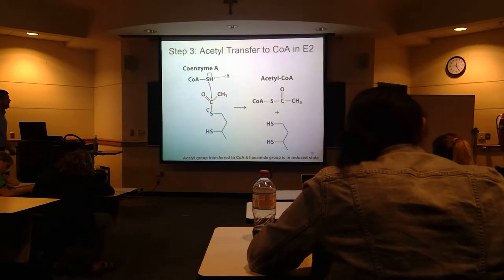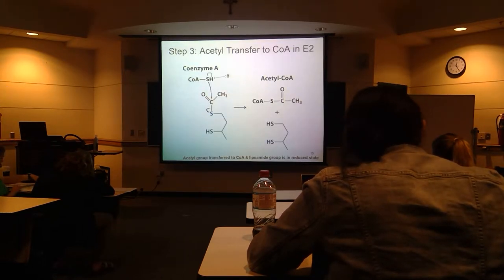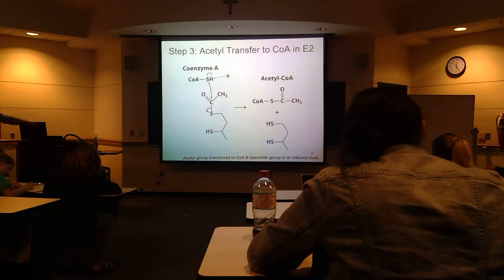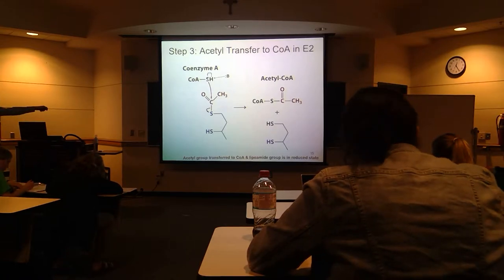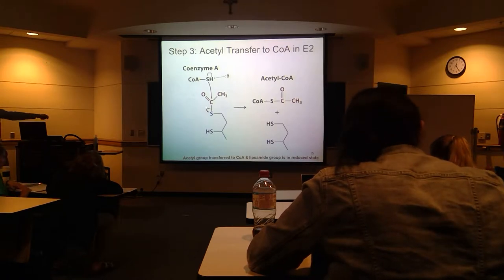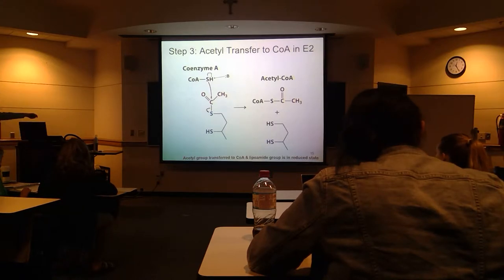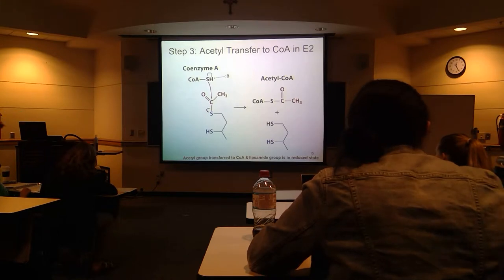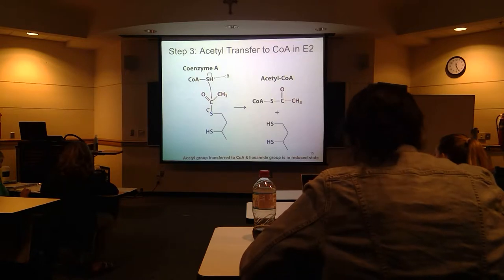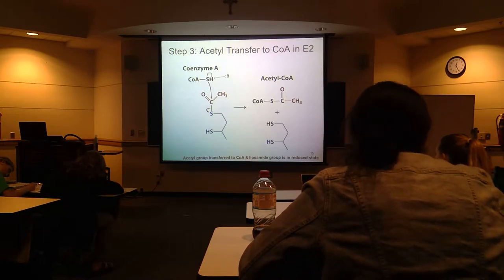So that's what happens in E2. We have our acetyl group attached to the lipoyllysine. The CoA-SH thiol group comes in as a good nucleophile and attacks the carbon of the acetyl group, making acetyl-CoA and breaking it off from the oxidized lipoyl group. So now we have produced acetyl-CoA, and we have our lipoyl group no longer linked to anything. This happened in E2 — we produced our acetyl-CoA.